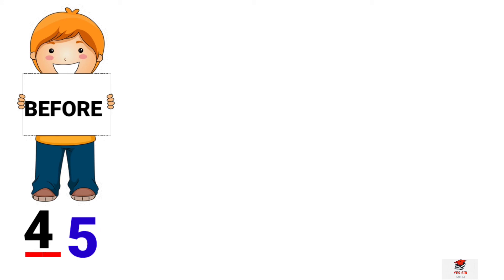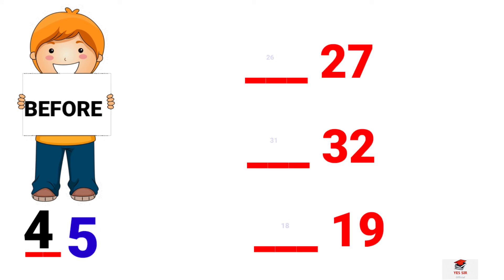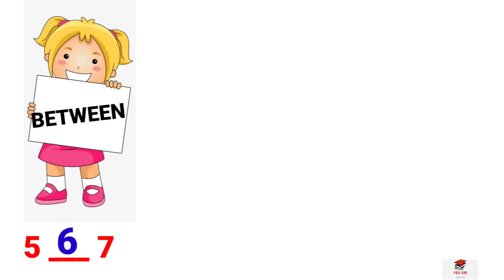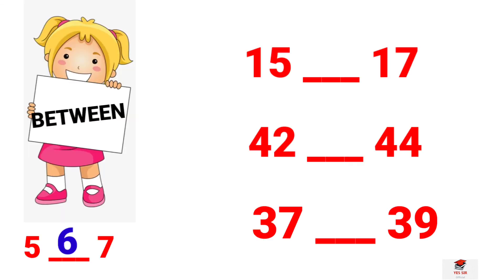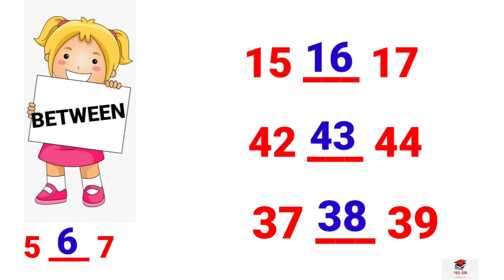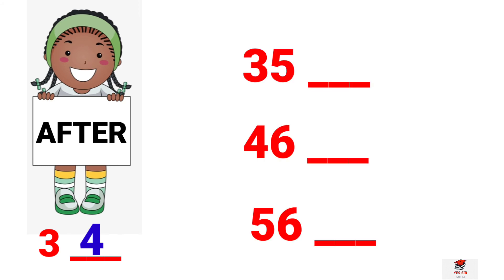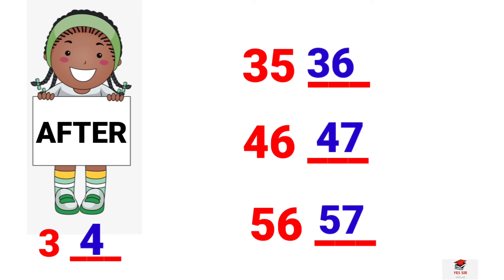Now we discuss some other examples. Before means aage. So friends, tell me. Yes. 5. Next, between. Between means majkhane. So now see. Very good. Next, after. After means baad. So friends, now see. Good. Very good. Great job.